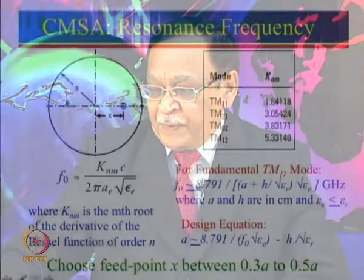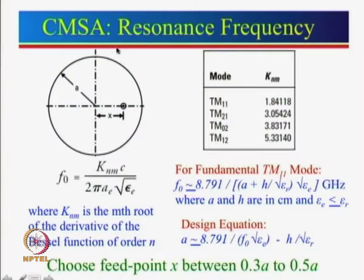We had just started talking about circular microstrip antenna, so today we will continue our discussion on it. A circular microstrip antenna is defined by its radius a, which is the governing parameter, and it is printed on a substrate.